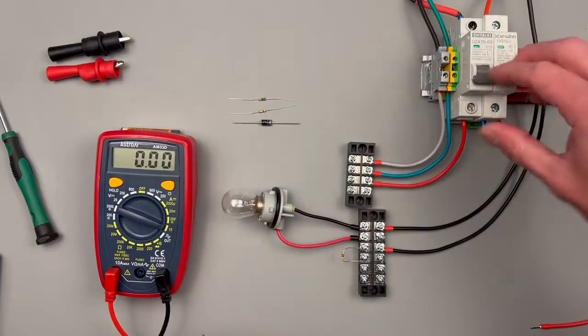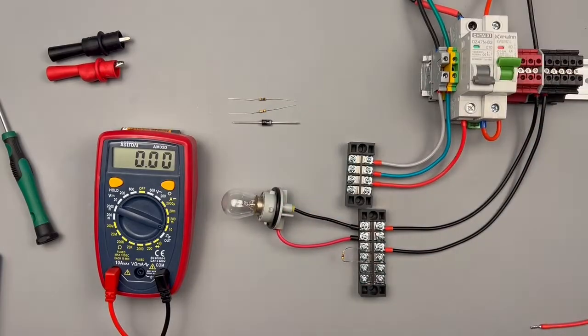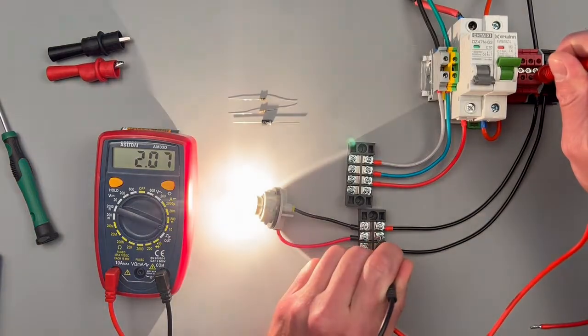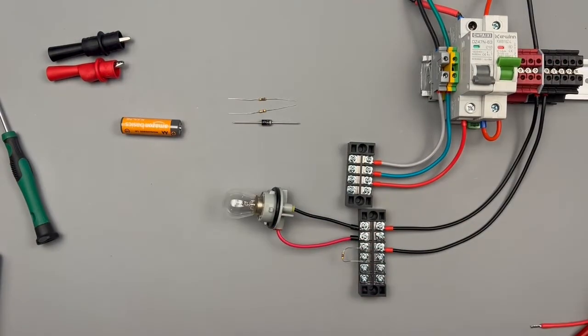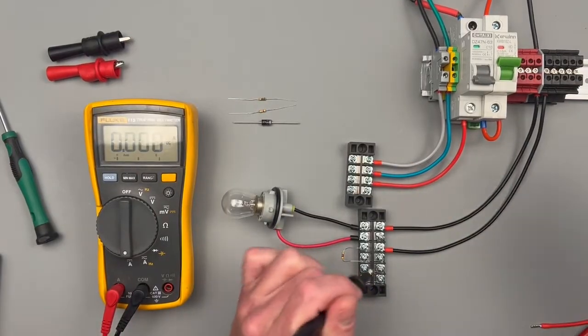I have this light bulb here, it's about a two amp load DC, and we are set to amperage DC. 2.03 amps DC. Let's compare it to our Fluke, which so far this thing's been pretty accurate. So I'm pretty excited about that. 2.04. Really, really close.